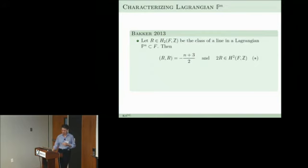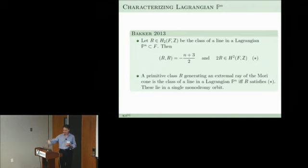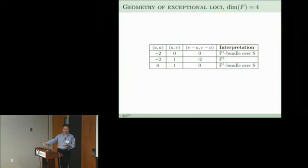Bakker's theorem is that if you have the class of a line in a Lagrangian P^n then its square is minus (n+3)/2 and twice the class is in H^{upper 2}. Conversely, if you have a primitive class that generates an extremal ray of the Mori cone satisfying these numerics, then it has to be the class of a line in a Lagrangian P^n, and moreover there is only a single monodromy orbit for that class. However, this is not yet a complete answer because there can be non-primitive classes.